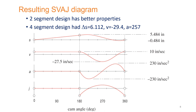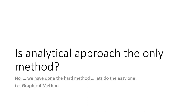The resulting SVAJ diagram for the two-segment case completes that discussion — you can see that there are only two segments, with the corresponding S, V, A, J diagrams. Is the analytical approach the only method? No, it is not. There is another graphical method — a much easier graphical method. We have done the hard method already; now we are going to do the easy method.